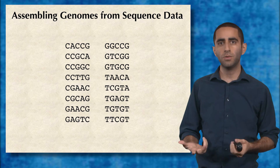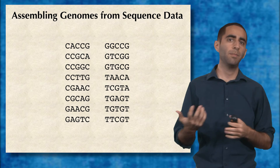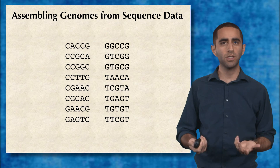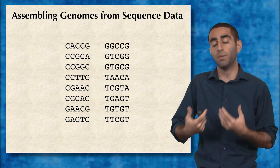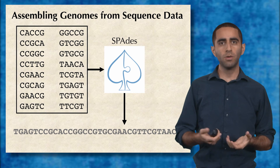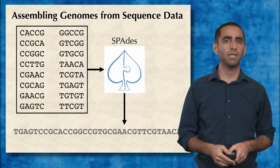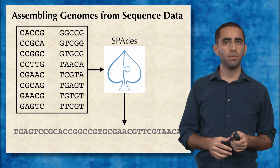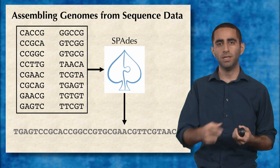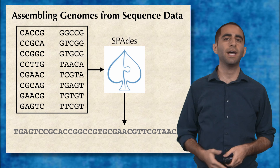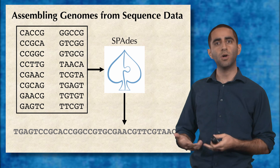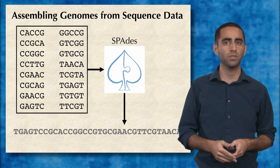All we know is the sequence, but we don't know anything about order, position, or anything like that. So as a result, we're somewhat blind in this process. Instead, we use tools like SPADES, a genome assembler, to be able to figure out the best possible stitching of these reads to generate the entire genome.